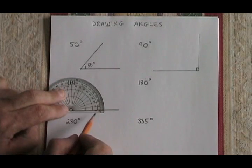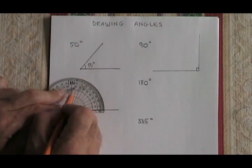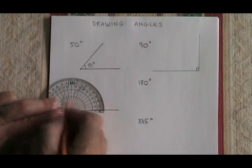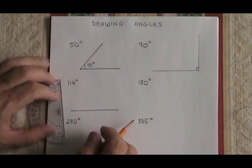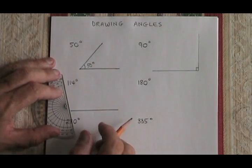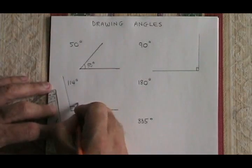And then we are counting up from zero. Well, that's the inner numbers on this side of the protractor. So I keep on going past 90 until I get to 114, which is going to be right about here. And then I draw a line between the dot that I marked and the vertex that I was using. This is a 114 degree angle.